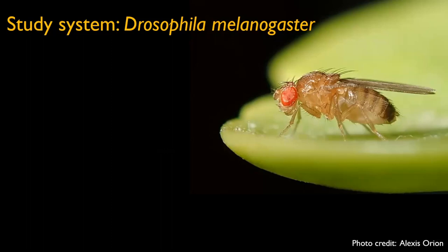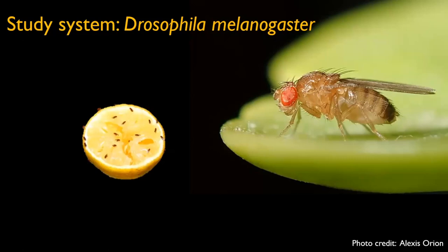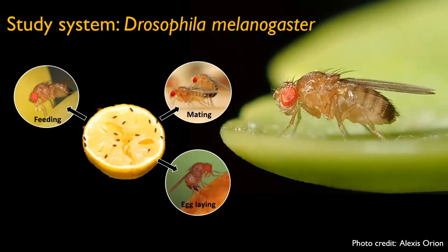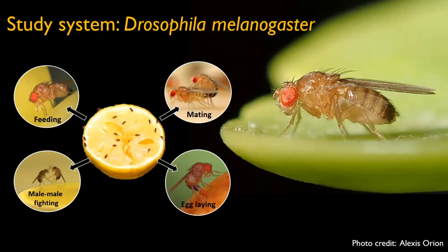Fruit flies spend their entire lives in a social group on rotting fruit — a really interesting system to test questions about social behavior and pathogen transmission, especially because they live in a microbe-rich environment. The likelihood of encountering pathogens is very high, making it a good system for these types of questions.